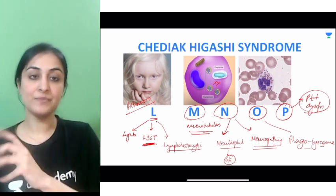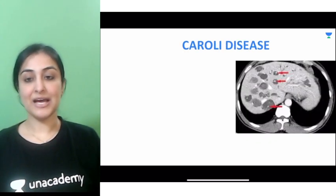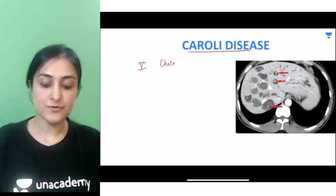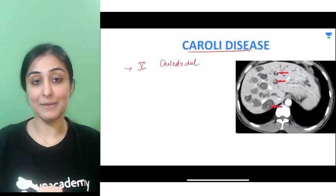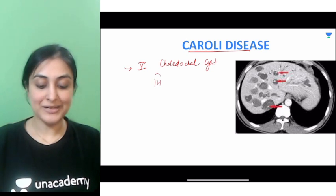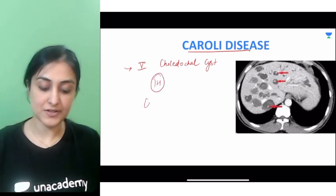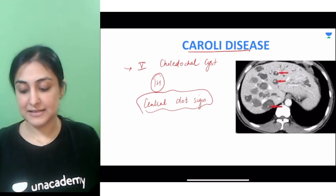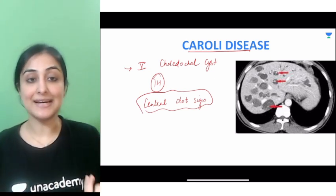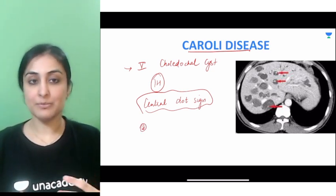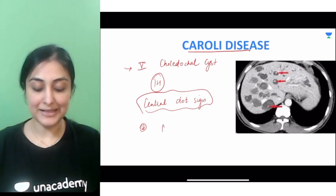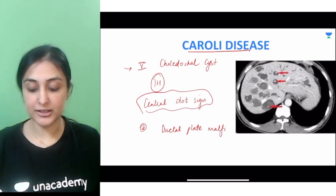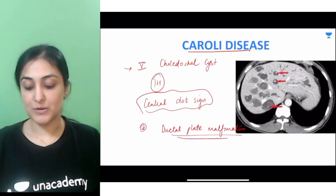Finally, Caroli's disease. It is a type V choledochal cyst wherein you have dilatation of the intrahepatic biliary radicals — intrahepatic involvement only. The characteristic sign is the central dot sign, which represents the portal veins seen within the dilated biliary radicals. For an extra edge, remember this is a type of ductal plate malformation — a theory that covers all cystic lesions of the liver.